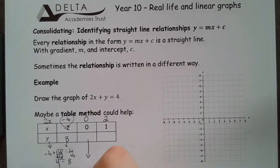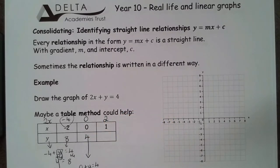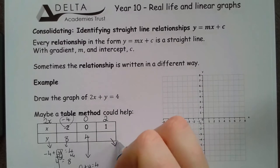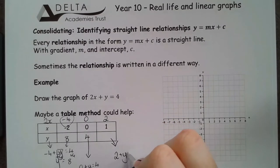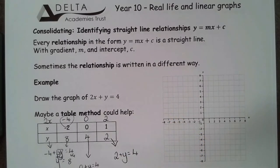For this 0, I'm going to have 0 plus y is equal to 4. So, y must be 4. And then in this last one, I've got 2 plus y is going to give me 4. So, y must be 2 by taking 2 off each side.